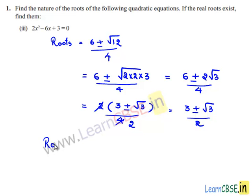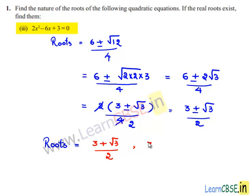Therefore, the required roots of the given equation are (3 plus √3) divided by 2 and (3 minus √3) divided by 2.